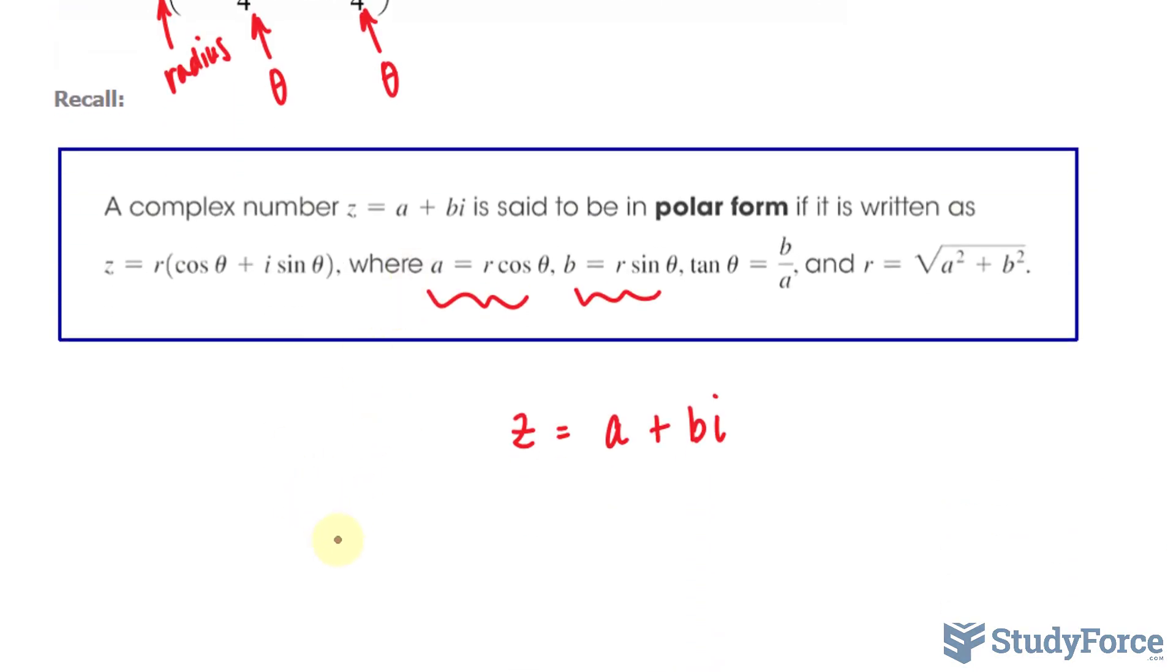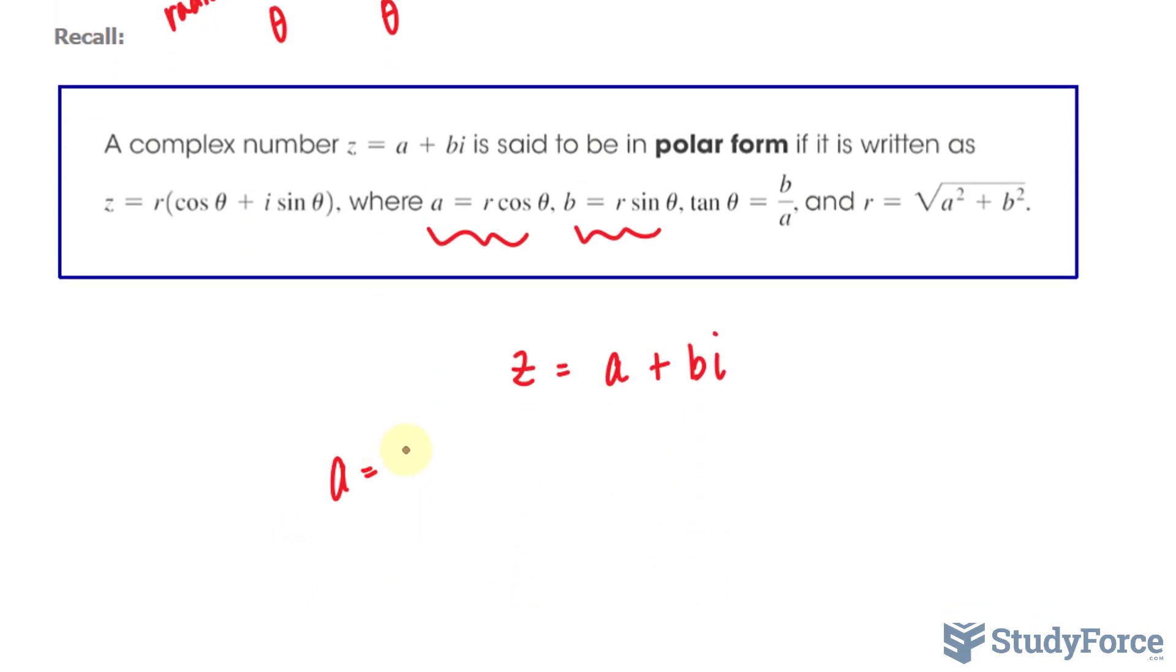Using that first formula, A is equal to the radius of 3 times cosine of 7π over 4, and B is the same thing except we replace cosine with sine.